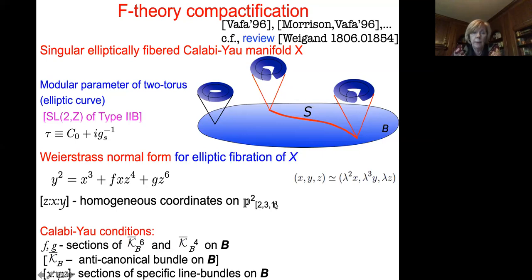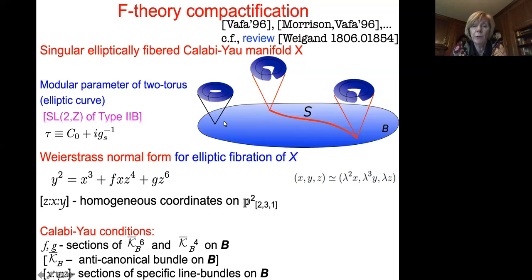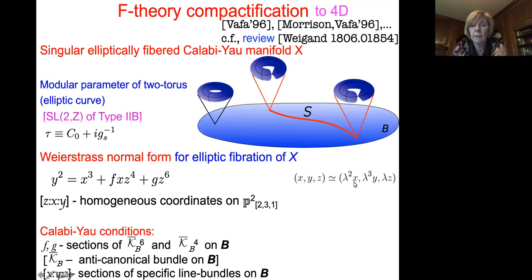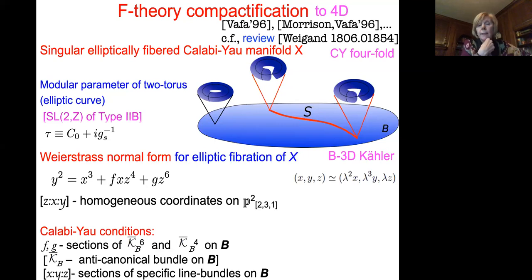To achieve the fibration resulting in an elliptically-fibered Calabi-Yau manifold, this elliptic curve is promoted into a fibration over the base. Both coordinates of this weighted projective space as well as coefficients f and g become specific sections of bundles specified by the base. A compactification down to four dimensions results in a Calabi-Yau fourfold — eight complex dimensions — with a three-dimensional complex base.